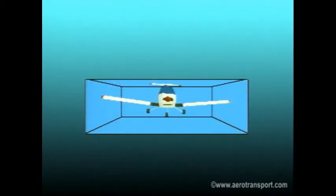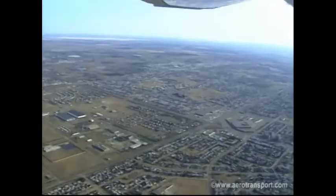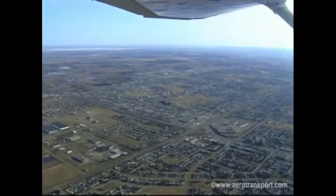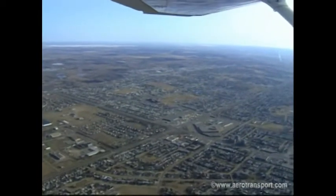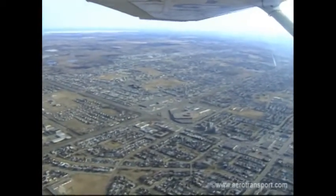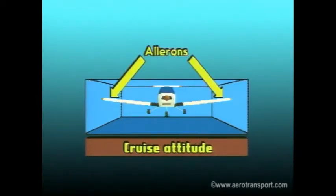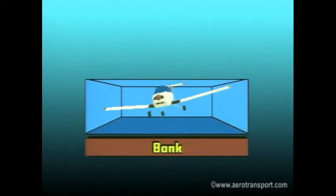You achieve straight and level flight by the coordinated use of all three flight controls. The amount of effort and coordination to keep the aircraft level will vary according to how rough the flying conditions are. The aircraft should be in the cruise attitude, which can be established by visually fixing the relationship of the wingtips and nose with the horizon. Cruise attitude assumes the wings are level with the horizon.